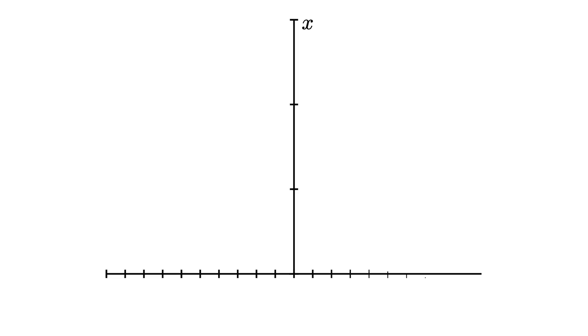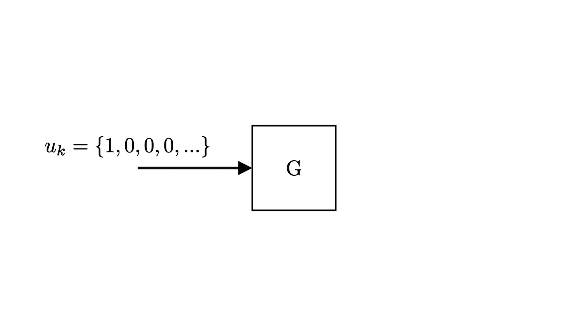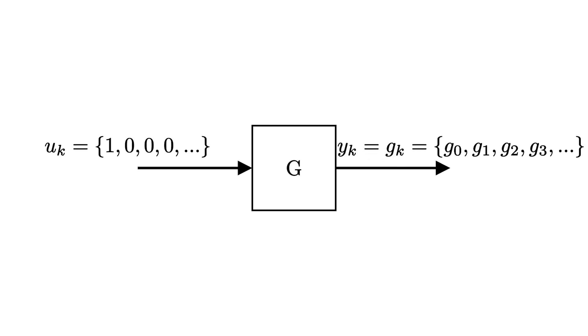Now let's build up a convolutional representation of systems, which requires defining the unit pulse and the unit pulse response. This section summarizes my video on the pulse and impulse response, so check that out for a more in-depth explanation. A unit pulse is defined as a spike of one at time zero and zero everywhere else. The pulse response is the output of a system when you feed that spike of input into it. As a sequence, the unit pulse is just 1, 0, 0, 0, ..., and if I feed that into system G, I get the pulse response G0, G1, G2, and so on.